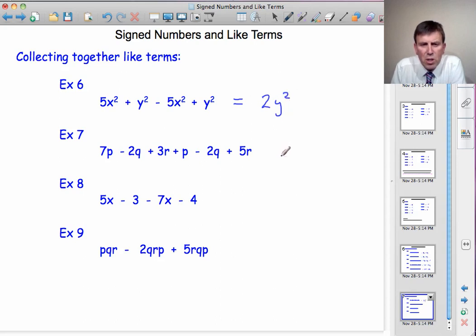Now I've got p's, q's, and r's in this example 7. Sort them out one at a time. 7p plus p is equal to 8p. Now I'll sort the q's. Minus 2q minus another 2q is minus 4q. And finally, plus 3r plus 5r is plus 8r. Final answer, 8p minus 4q plus 8r.